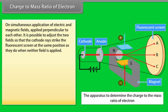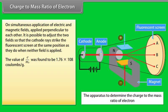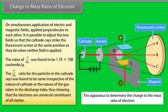Charge to mass ratio of electron: On simultaneous application of electric and magnetic fields perpendicular to each other, it is possible to adjust the two fields so that cathode rays strike the fluorescent screen at the same position as when neither field is applied. The value of charge to mass ratio of electrons was found to be 1.76 × 10⁸ coulombs per gram. This E/M ratio was found to be the same irrespective of the nature of the cathode or the gas in the discharge tube, showing that electrons are a universal constituent of all matter.